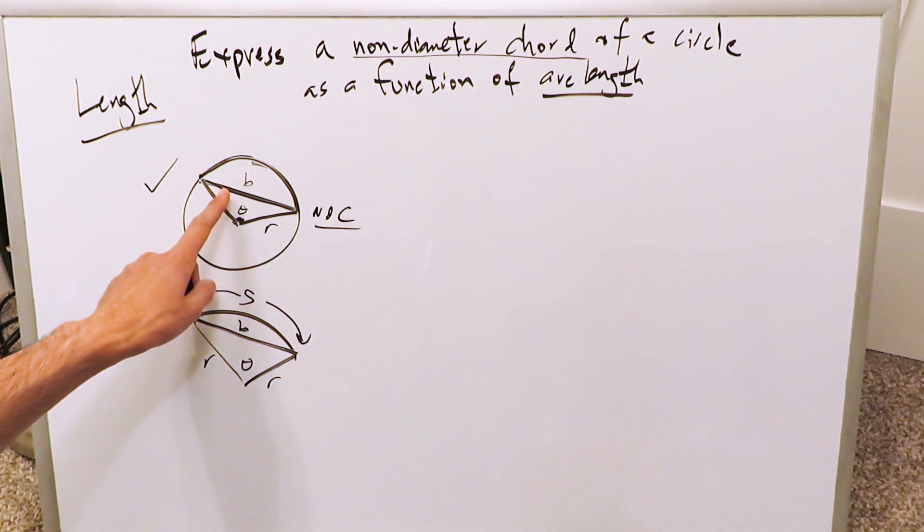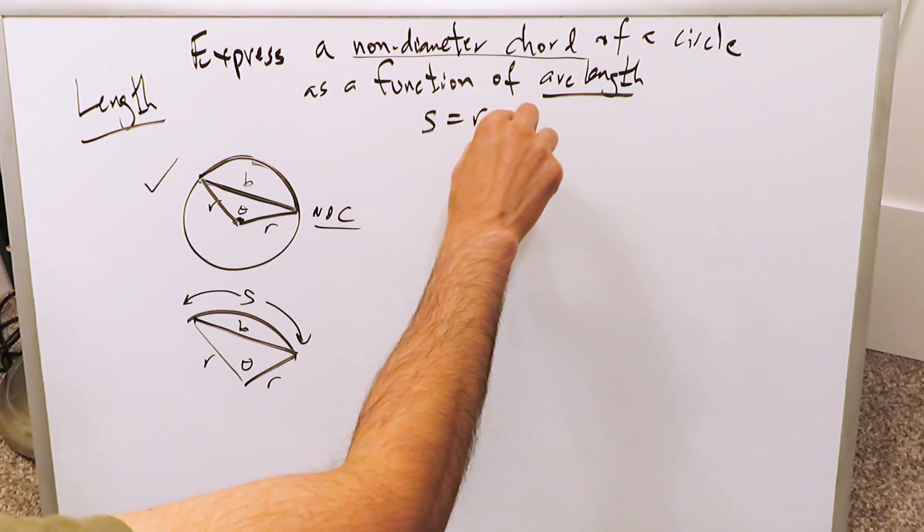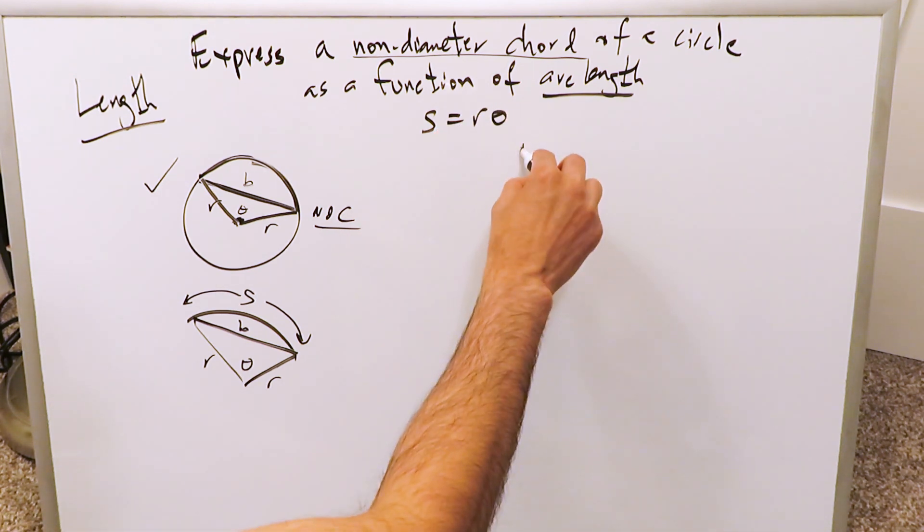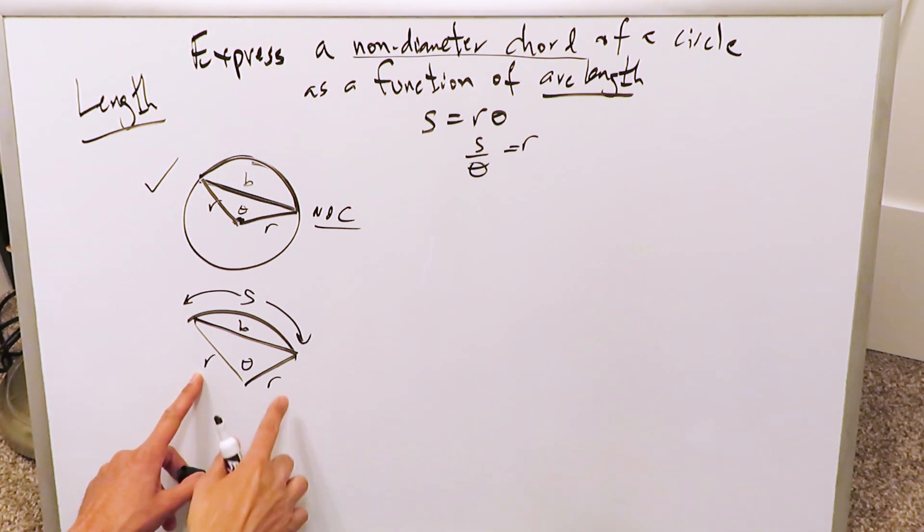How can we express the length of this segment B, which is a non-diameter chord, as a function of that arc length S? You know the arc length formula, S is equal to R theta. Why don't you solve for that R, and you'll have S over theta. Now you have R's and R's which can be substituted here by S over theta, and that's exactly what I will do.